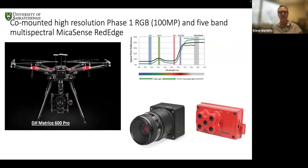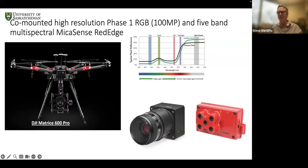We bought some industrial-size UAVs and equipped them with a high-resolution RGB camera. The real workhorse of what we've done has been one of the Micasense five-band multispectral cameras. These are called multispectral sensors because there are five separate cameras, each a black-and-white camera with a filter in front to let just a specific wavelength through — blue, green, red, red edge, and near-infrared.